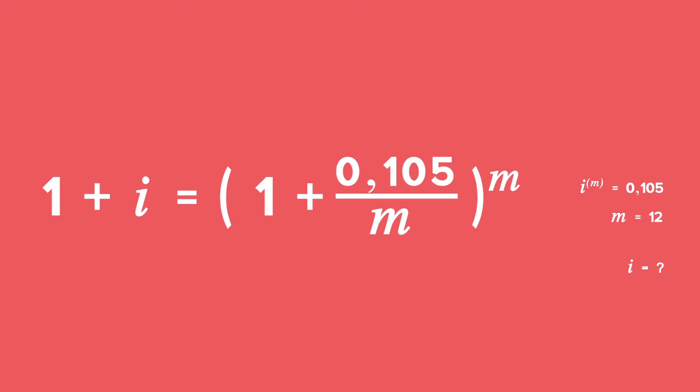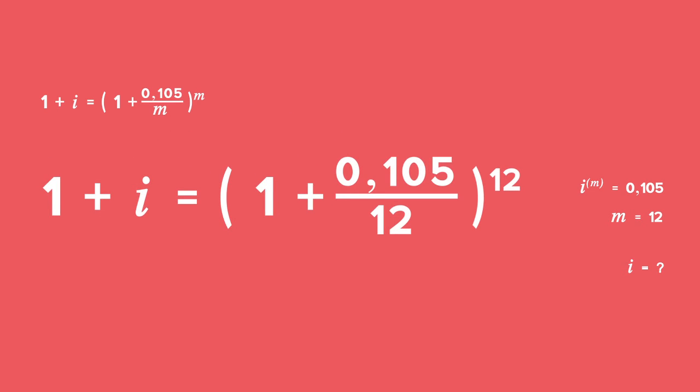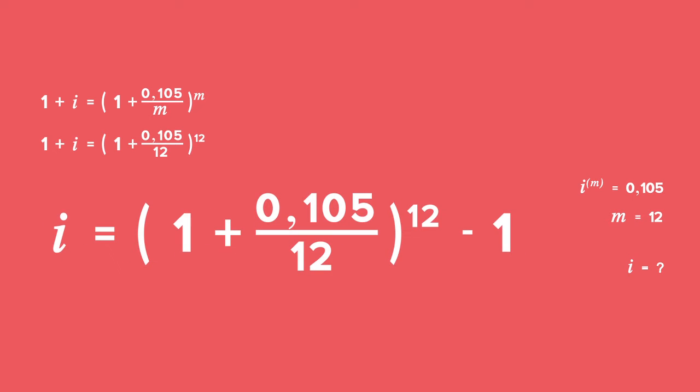Get i^(m) in decimal form by dividing 10.5% by 100, which gives 0.105. Substitute i^(m) and m = 12 into the formula. To find i,